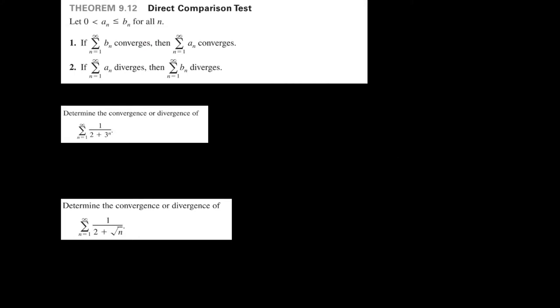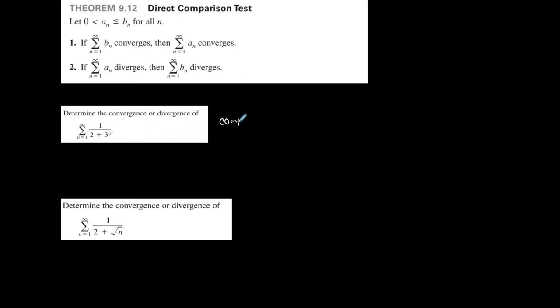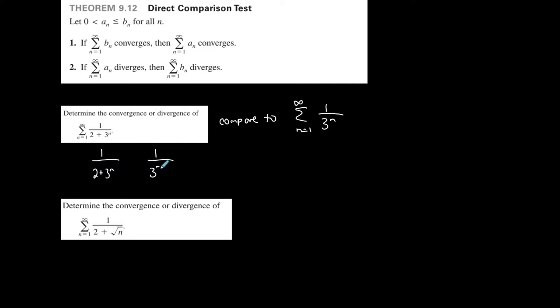For example, determine the convergence or divergence of 1 over (2 plus 3 to the n). Let's compare it to the summation from 1 to infinity of 1 over 3 to the n. Looking at just the nth terms: 1 over (2 plus 3^n) compared to 1 over 3^n. Which one of these would be larger? We'll determine which one is a_n and which one is b_n.